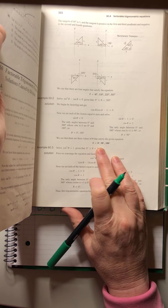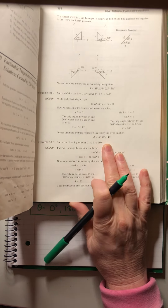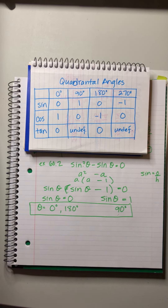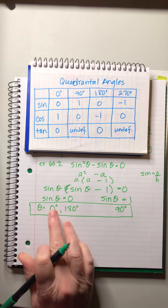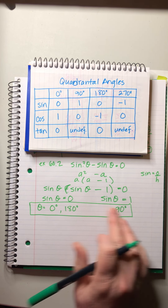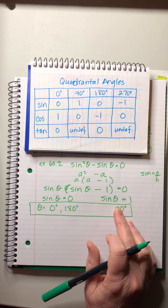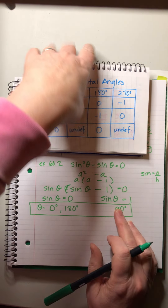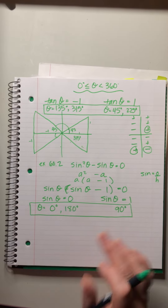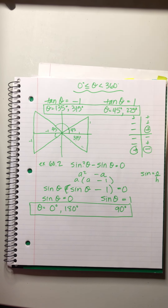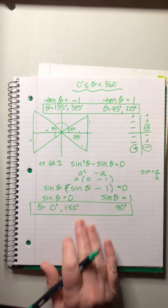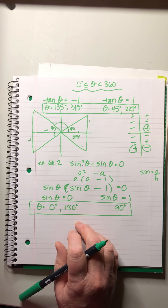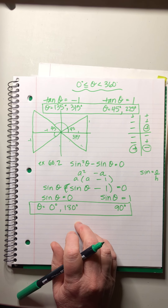The answer key confirms those values again, listing them in total order. I organize them by which part of the equation each one satisfies — either presentation is fine.